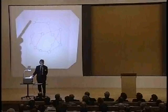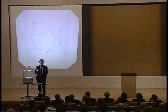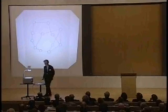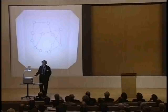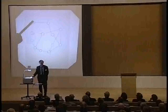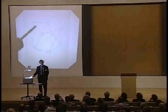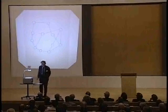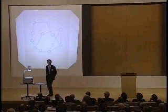Color in these circles here with two colors, let's say red and blue, in such a way that you never have the same color joined by one of these lines. How would we go about doing that?